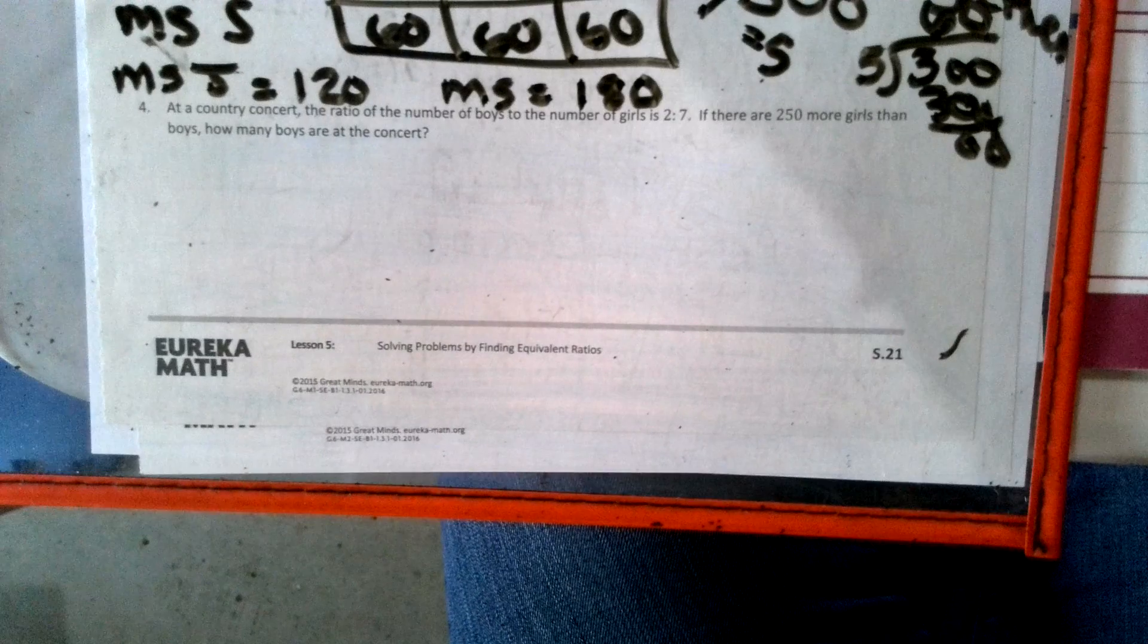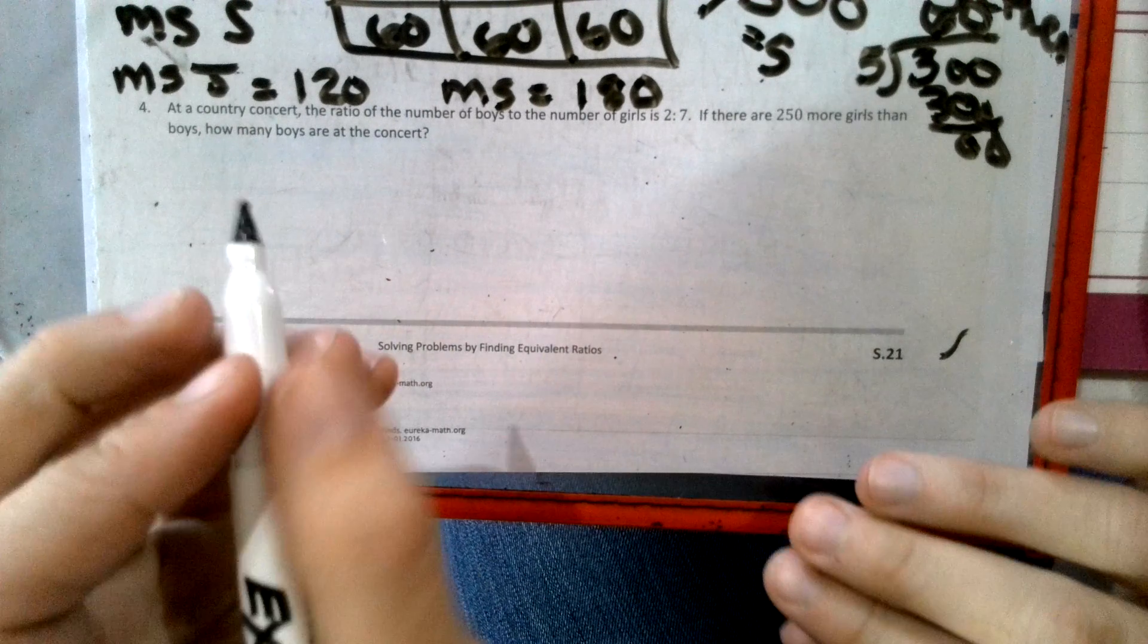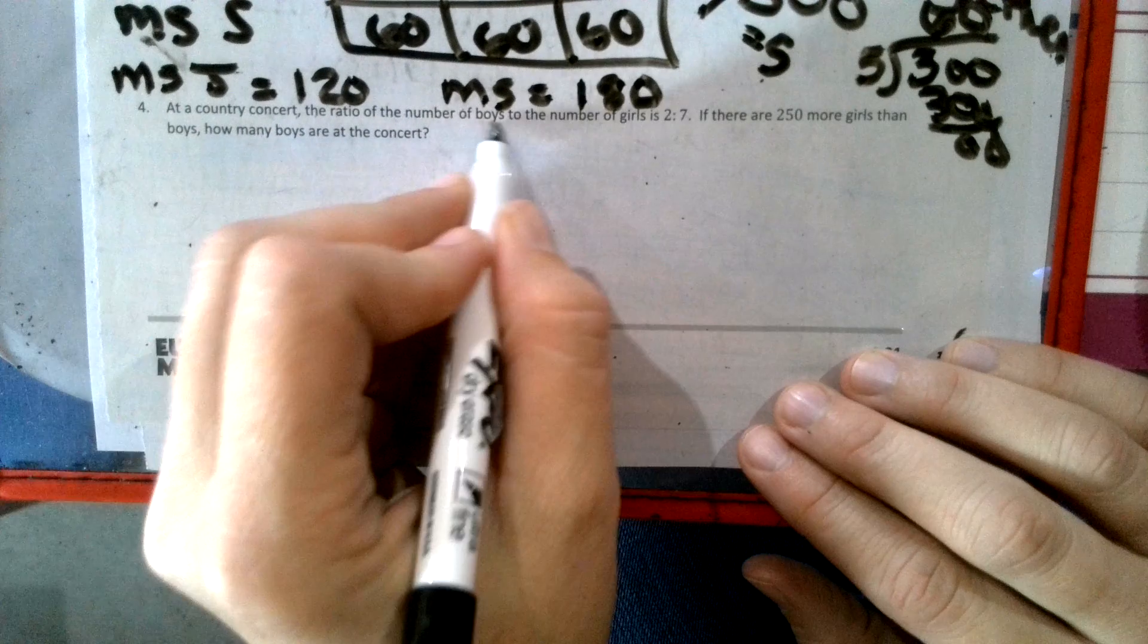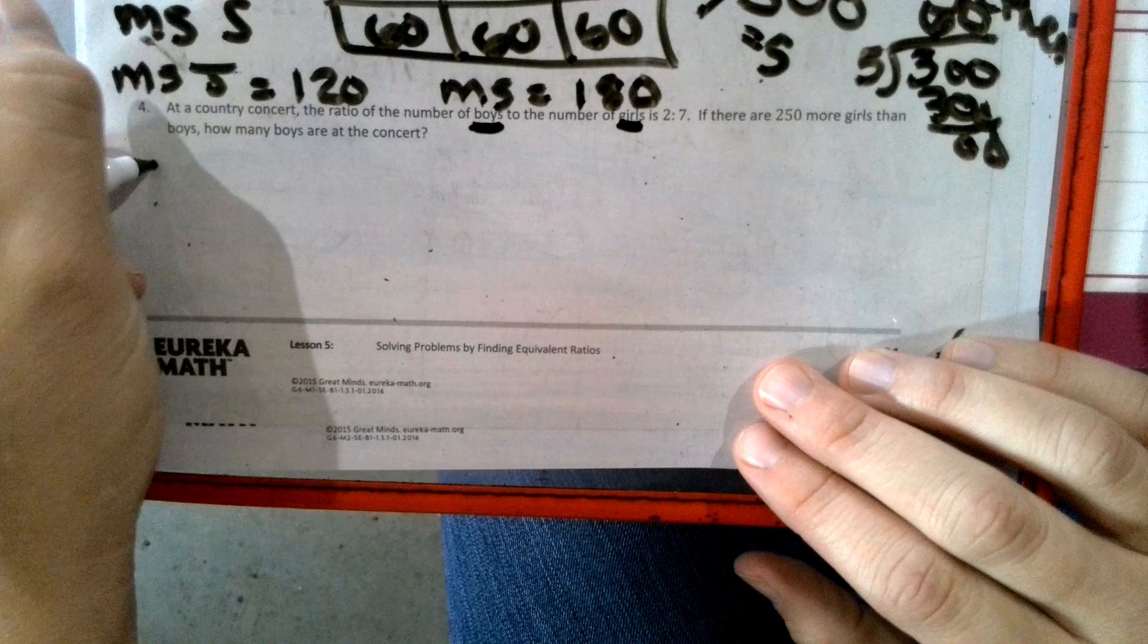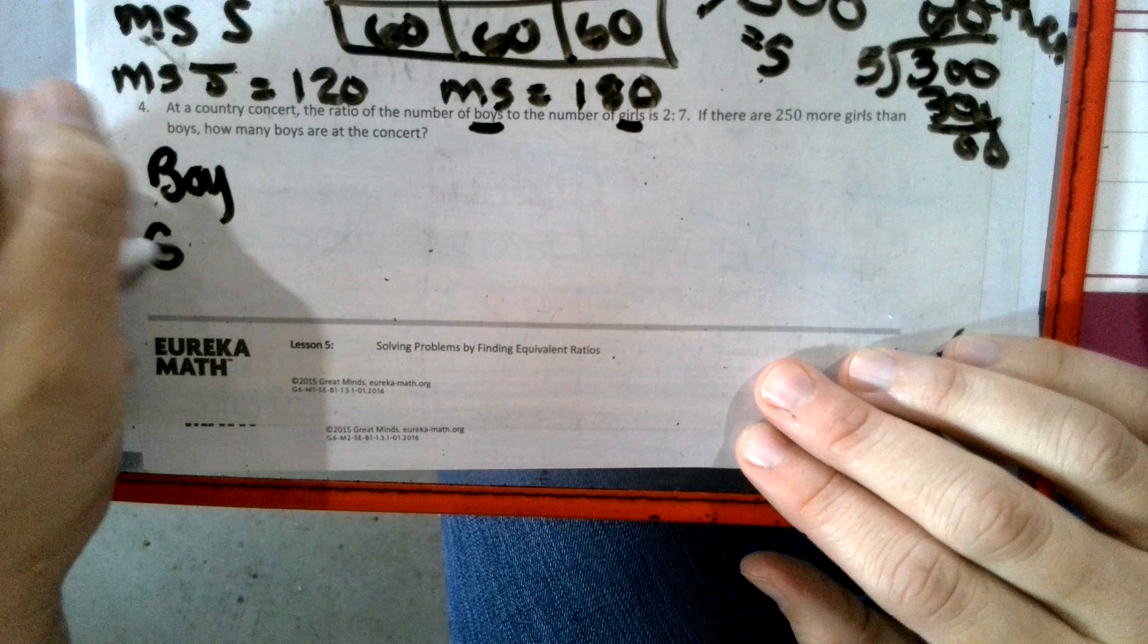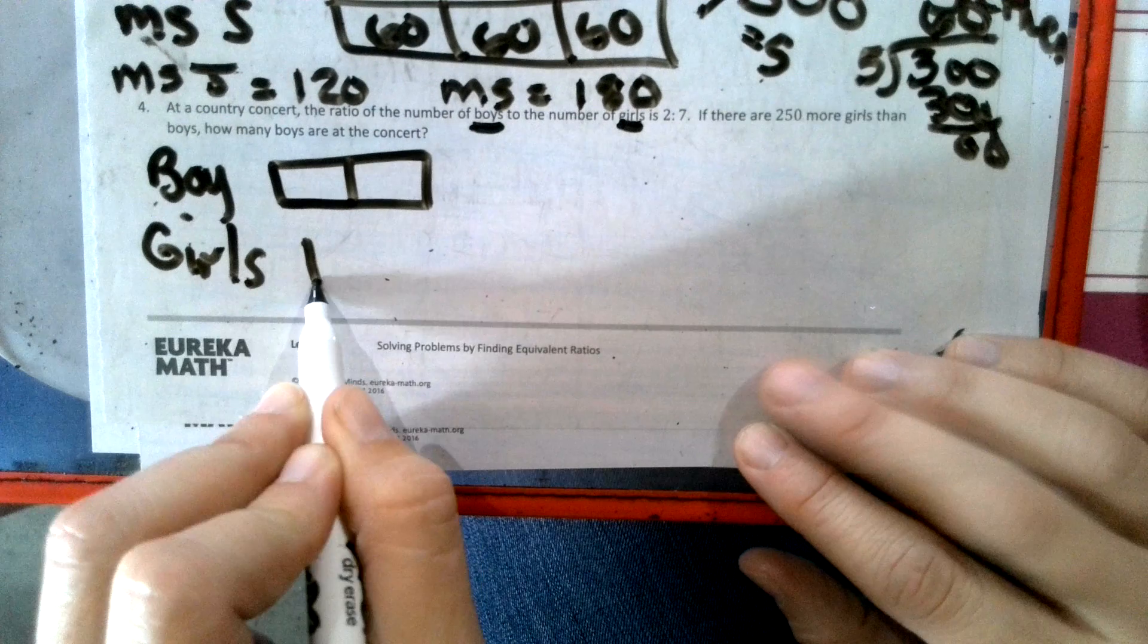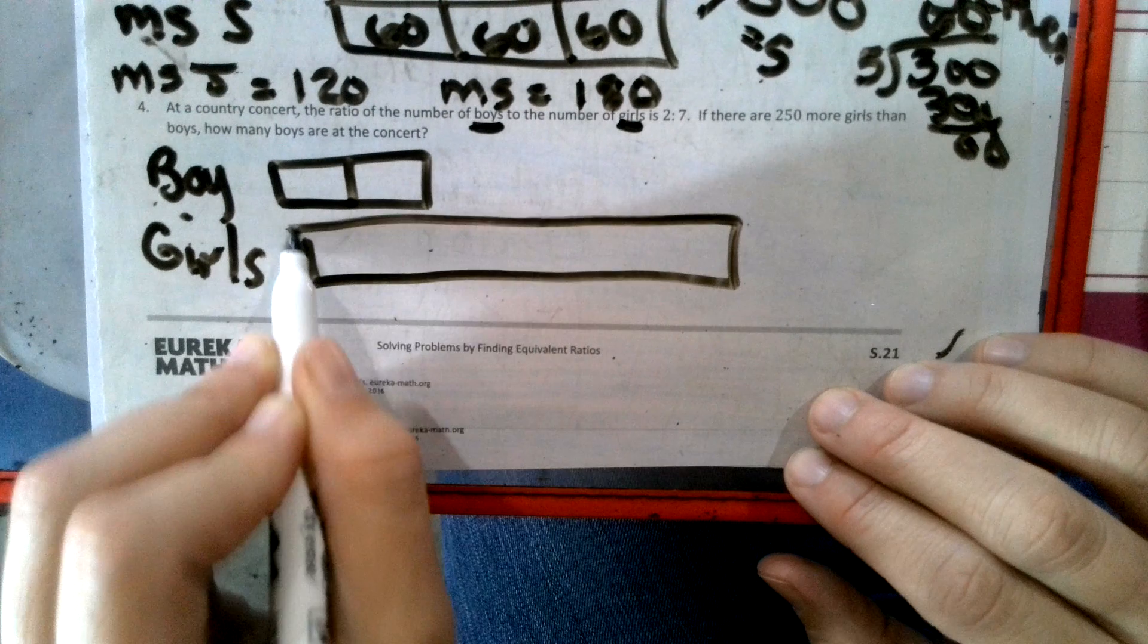Last one of an example. At a country concert, the number of boys to the number of girls. Boys are first. Girls are second. Boys. Girls. Boys got two boxes. Girls get seven boxes. One, two, three, four, five, six, seven.